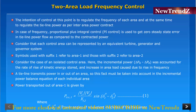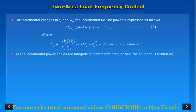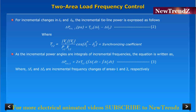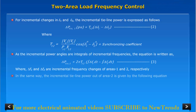For incremental changes in Delta one and Delta two, the incremental tie line power is expressed as follows. Since the incremental power angles are integrals of incremental frequencies, the equation is written in terms of Delta f1 and Delta f2, which are the incremental frequency changes of areas one and two respectively. In the same way, the incremental tie line power out of area two is given by the corresponding equation.